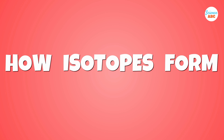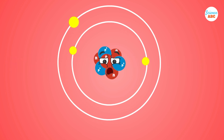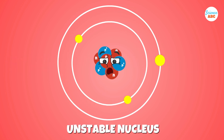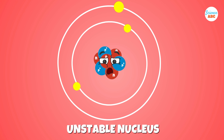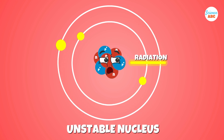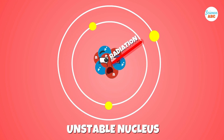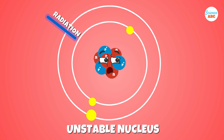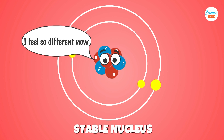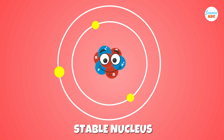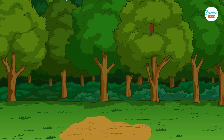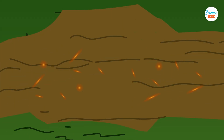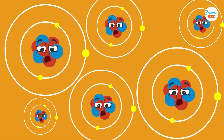Isotopes are formed in two primary ways. Firstly, they form when an unstable atomic nucleus undergoes radioactive decay by emitting radiation in the form of alpha particles, beta particles, photons, and neutrons. This process can occur naturally, as many naturally occurring elements have unstable nuclei.